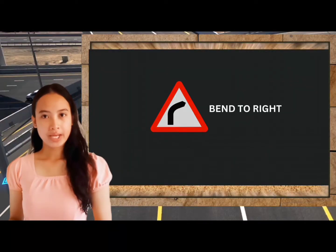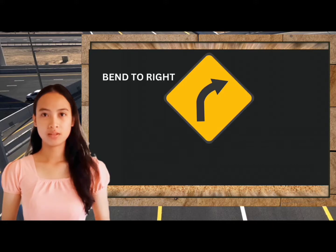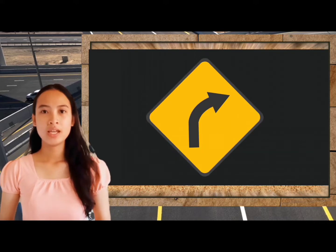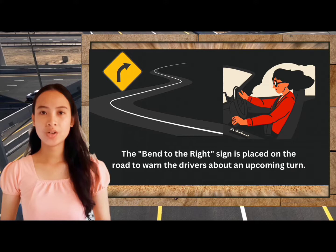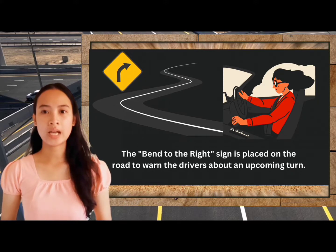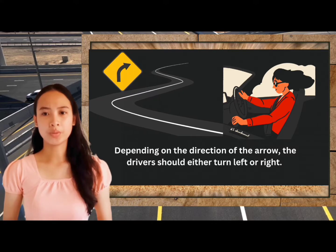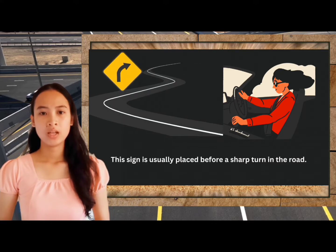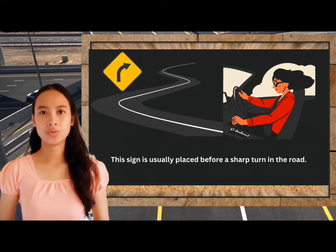Bend to the right. What does bend to the right mean? This sign cautions you about the right-hand curve on the road ahead. The bend to the left or right sign is placed on the road to warn the drivers about an upcoming turn. Depending on the direction of the arrow, the driver should either turn left or right. This sign is usually placed before a sharp turn in the road.